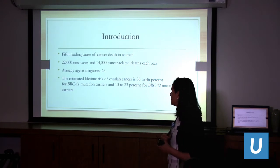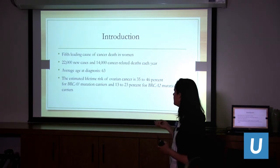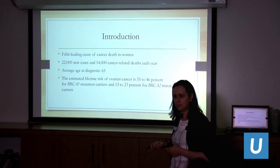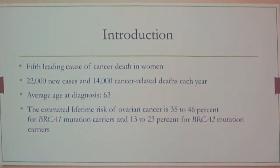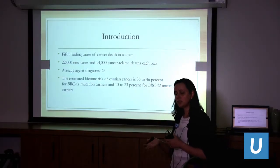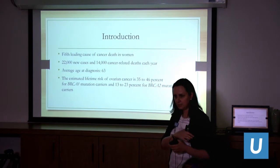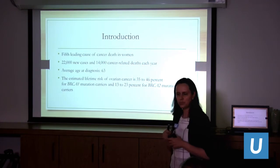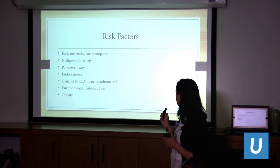If somebody has a genetic mutation — the main ones being the BRCA genes — the risk is much higher: 35 to 46 percent for BRCA1, and a little lower but still high for BRCA2 mutations. These are the same genes that also increase the risk of breast cancer, so there is an overlap between these two cancers in terms of genetics.